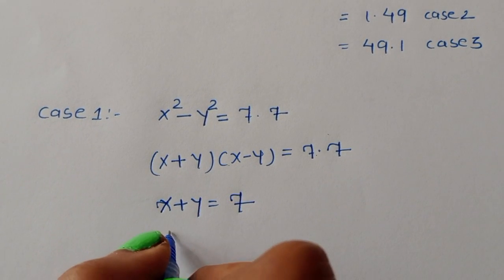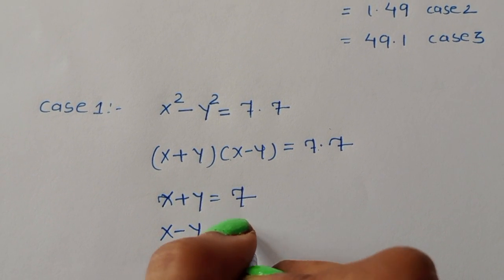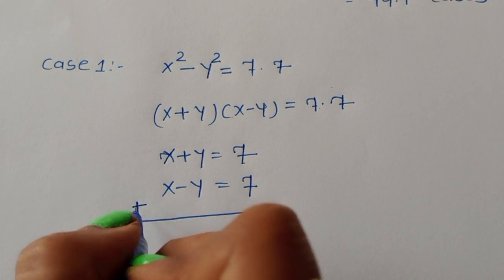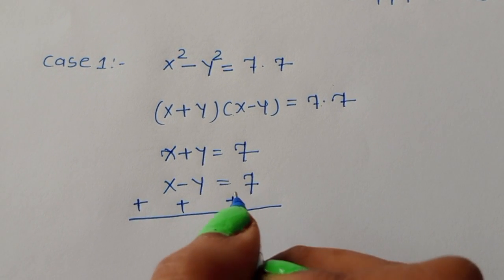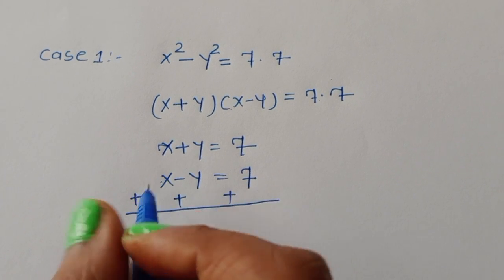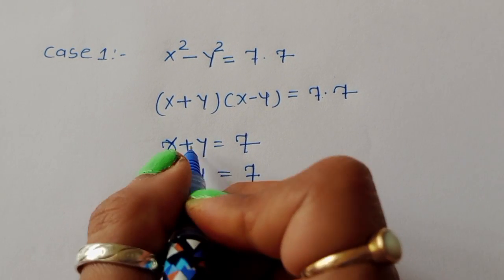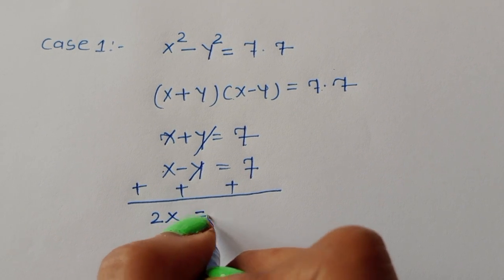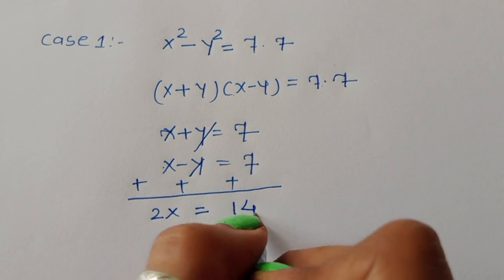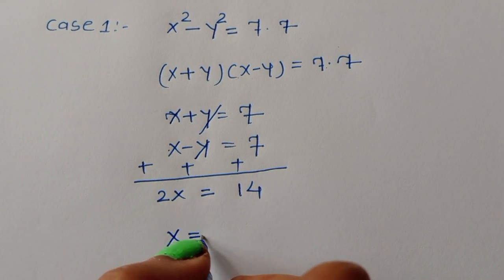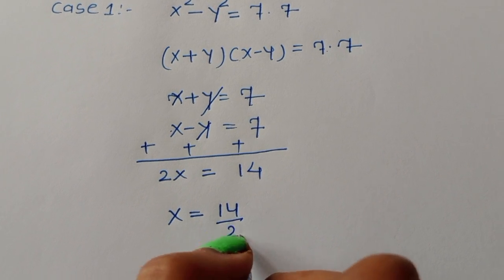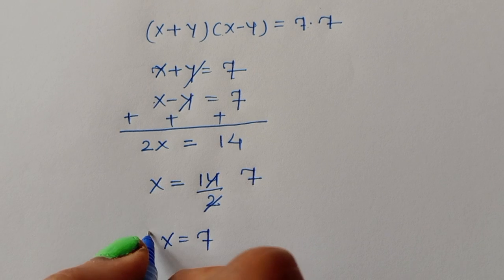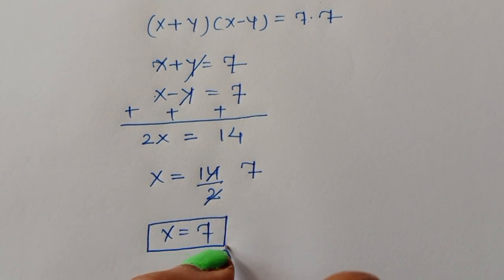Taking both equations — x + y = 7 and x - y = 7 — and adding them: x + x = 2x, and y - y cancels, giving 2x = 7 + 7 = 14. Therefore x = 14 ÷ 2 = 7. We got the value of x.